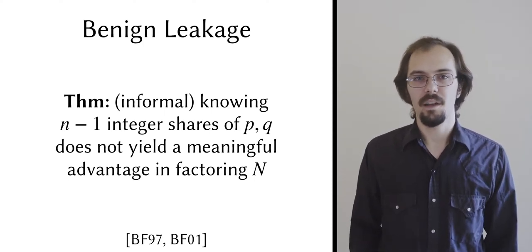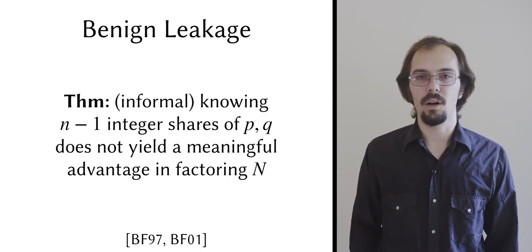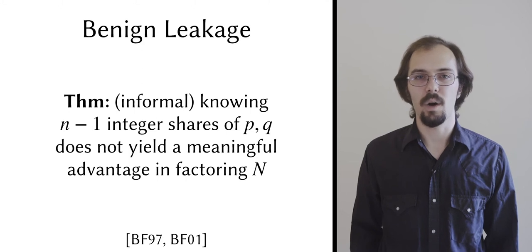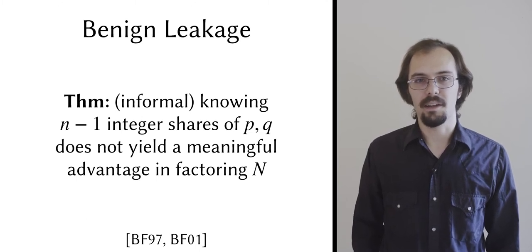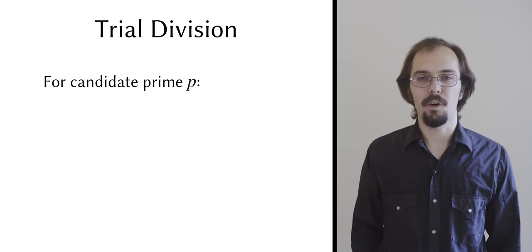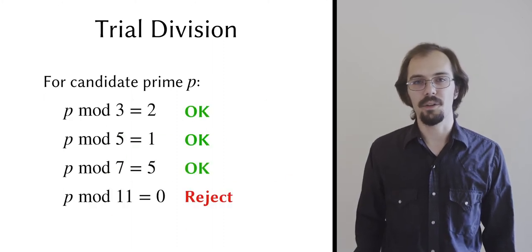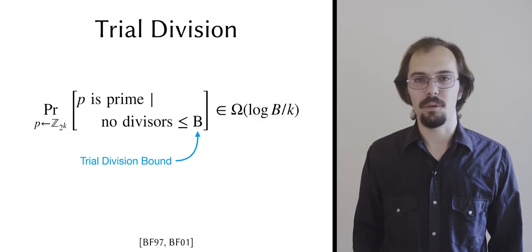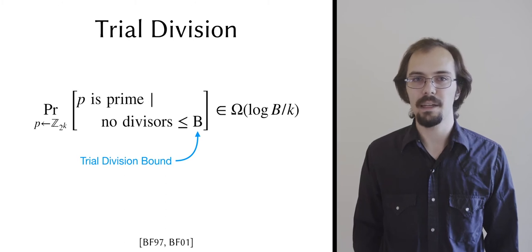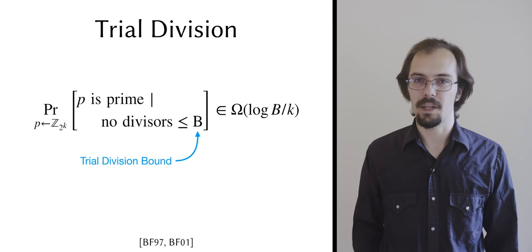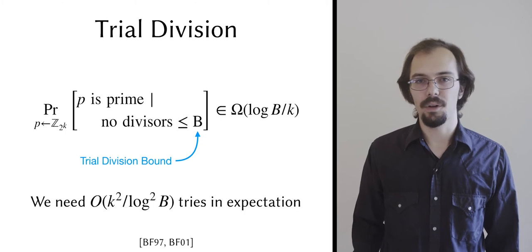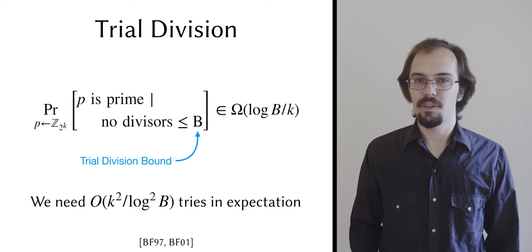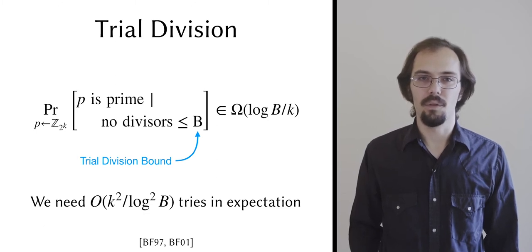Although the Boneh-Franklin test itself is efficient, the downside is that it requires us to guess two long prime numbers simultaneously in order to succeed, instead of just one as in the case of individual primality testing. To increase the probability of success, Boneh and Franklin try to filter out some of the candidate p's and q's that are obviously not prime before running the test. Each candidate factor is divided by a sequence of small primes and rejected if it divides evenly. This is known as trial division. They show that if a k-bit candidate prime is sampled uniformly, and it passes trial division by all primes up to some bound capital B, then it's prime with probability in omega of log of B over k. The probability that the biprimality test succeeds is the square of that, and if you repeat the whole protocol until you successfully sample a biprime, then the number of times that you have to repeat it is in expectation O of k squared over log squared of B.